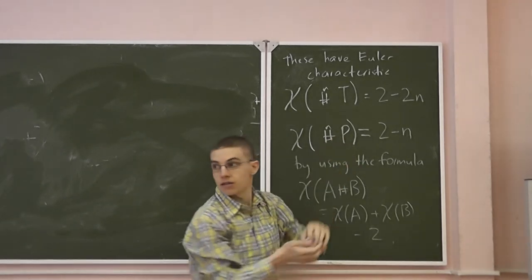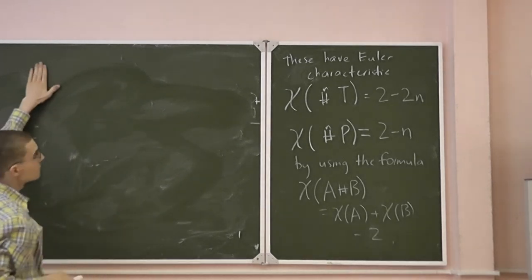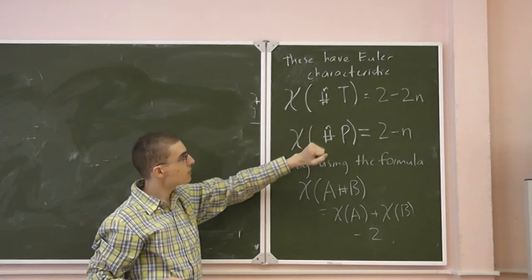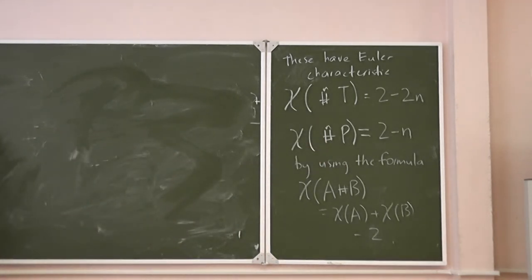How do we know those are different surfaces? Because the connect sum of tori is orientable and the connect sum of projective planes is not orientable. So just note...